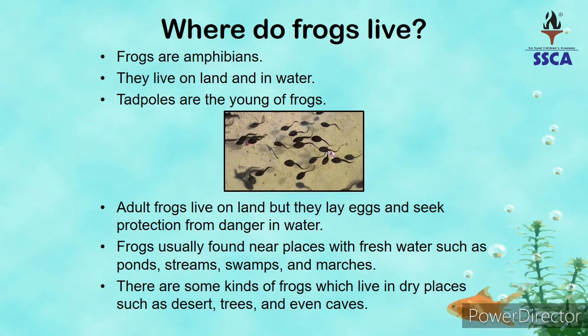Where do frogs live? Frogs kahaan rehte hain? Frogs are amphibians. Frogs amphibians hain. Why? They live on land and in water. Yani ke woh zameen aur paani dono mein reh sakte hain. So, woh organisms jo zameen aur paani dono mein reh sakte hain, hum un organisms ya un animals ko amphibians kehte hain.